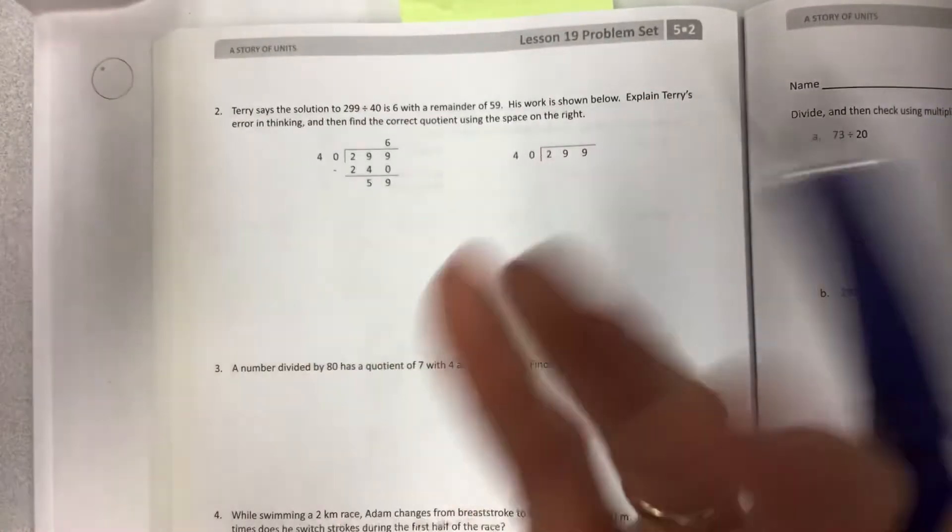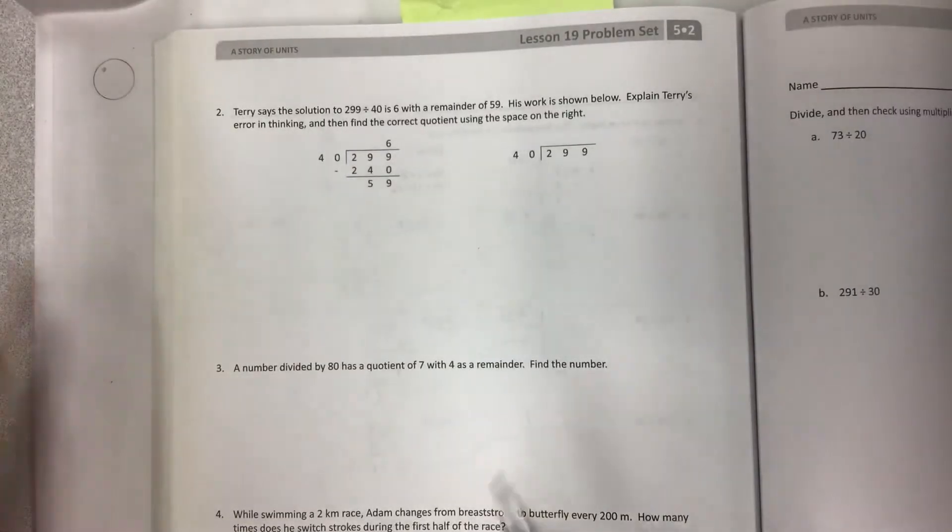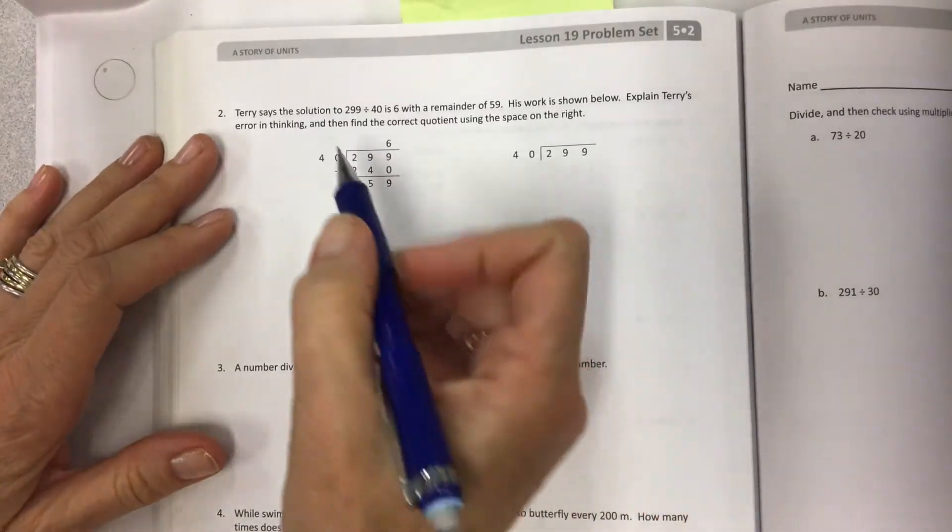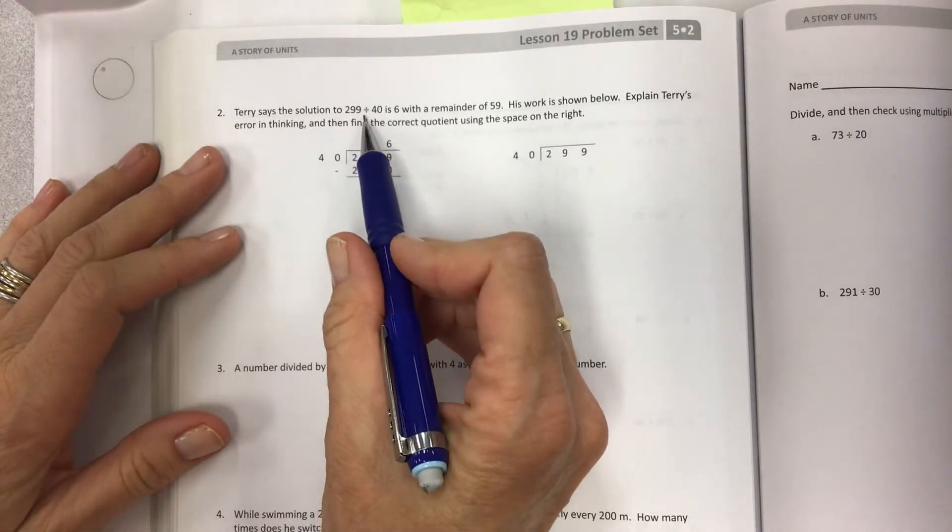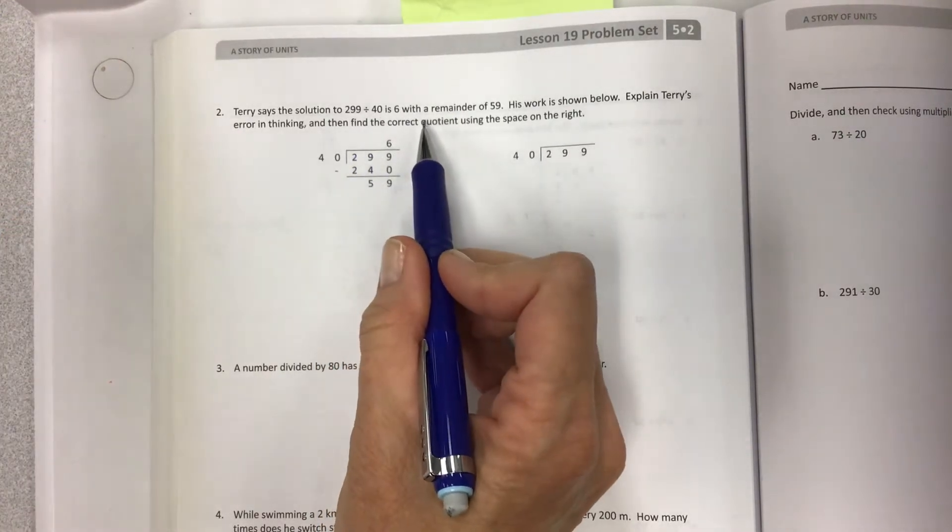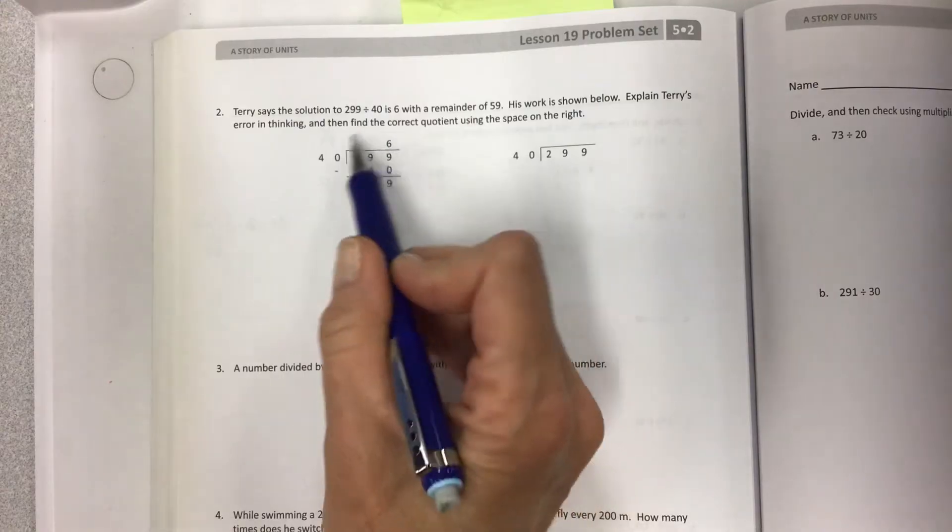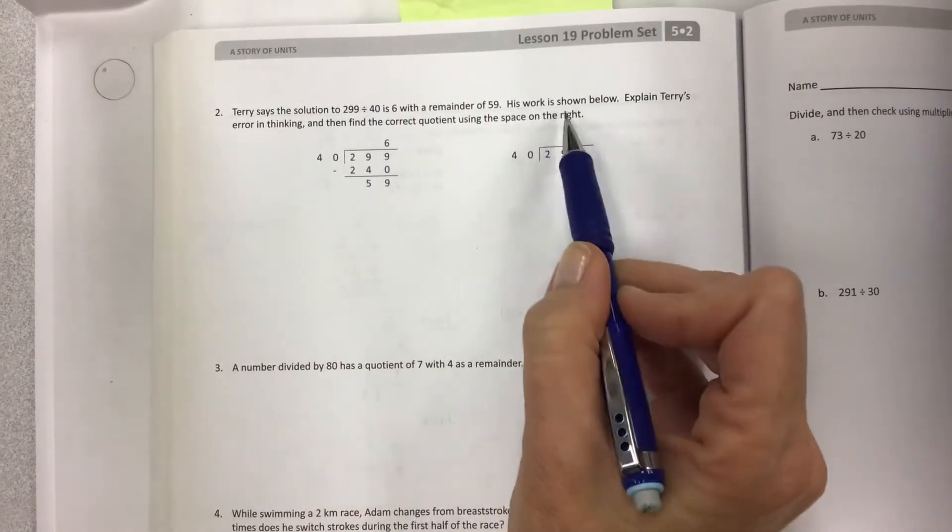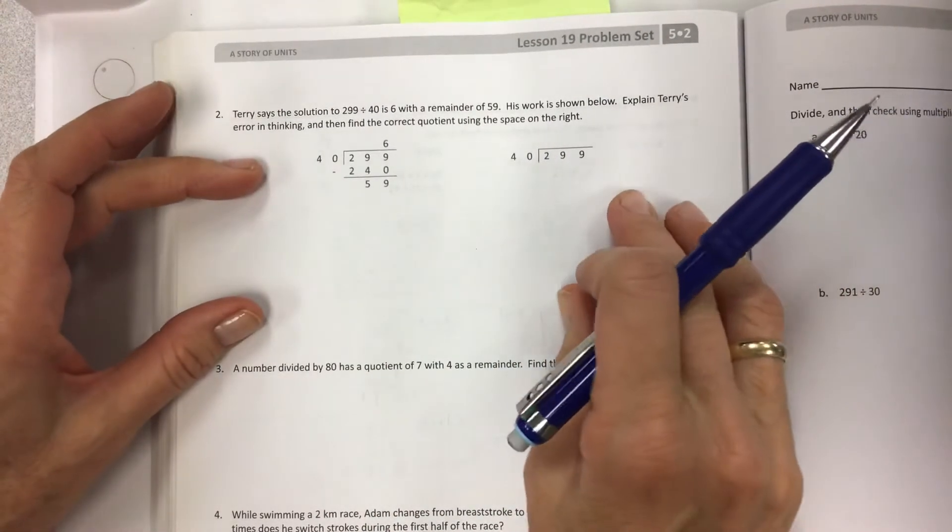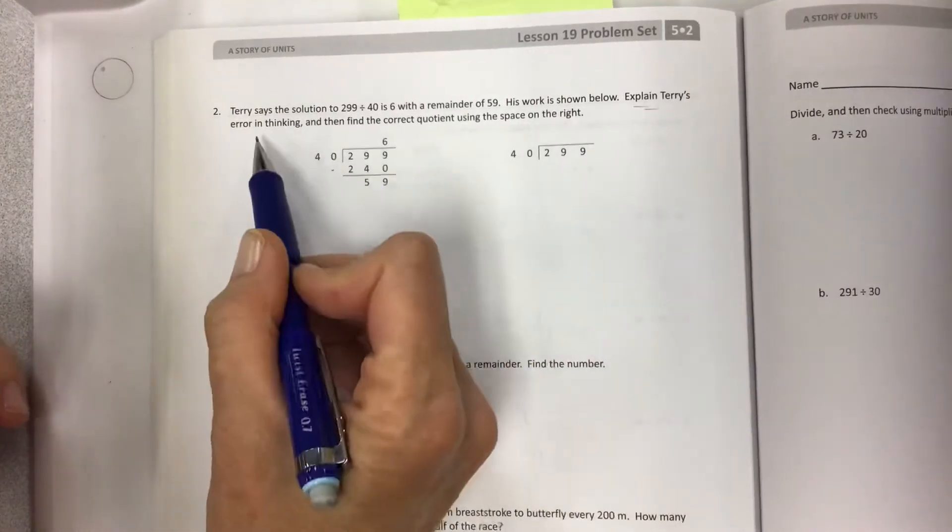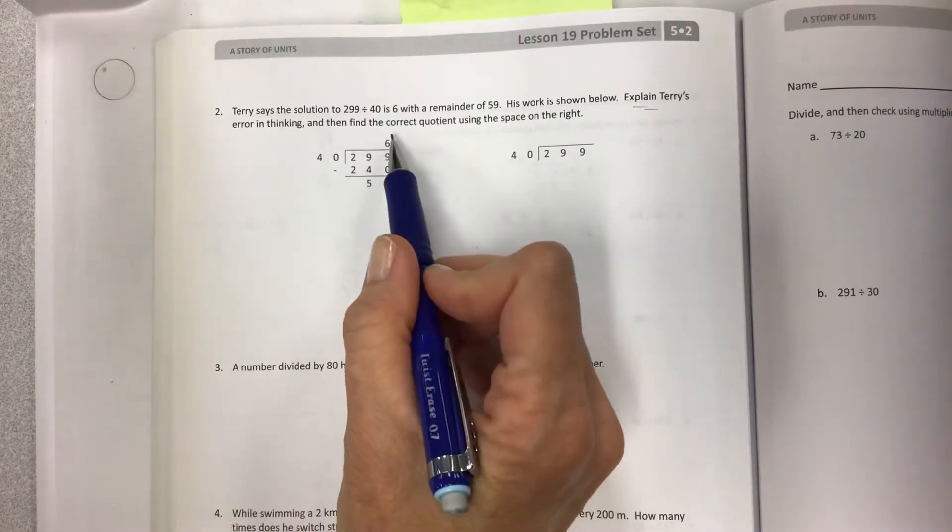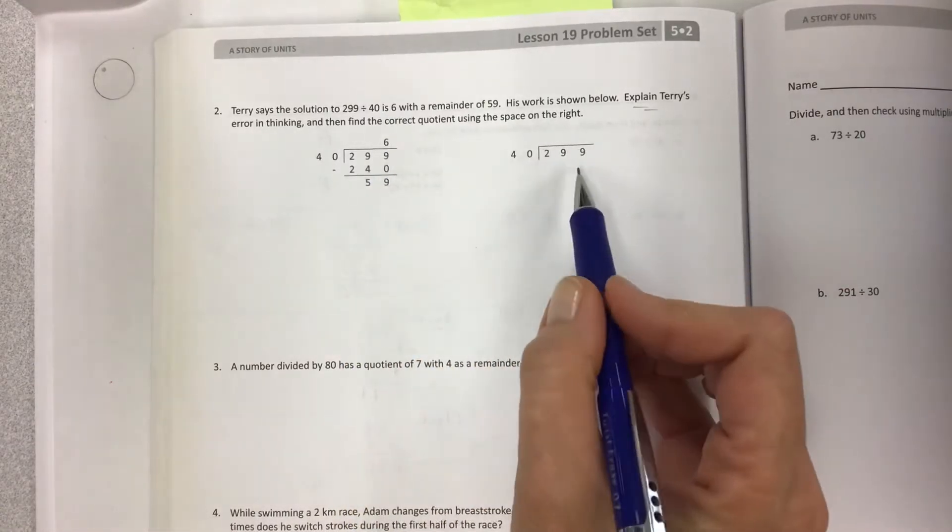Second page here. Oh, it's super out of focus, but it's going to focus. Yes. Thank you so much. Lovely little computer. Terry says the solution to 299 divided by 40 is 6 with a remainder of 59. So here's the work. His work is shown below. This is really important. This is on tests, you guys, so pay close attention. Explain Terry's error in thinking and then find the correct quotient using the space on the right.